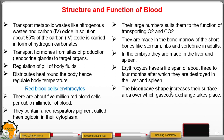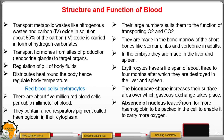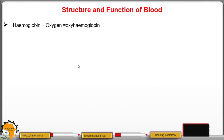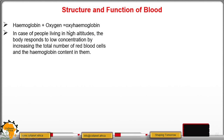Red blood cells are biconcave in shape to increase surface area for gaseous exchange. They also lack a nucleus, which provides room for more hemoglobin to be packaged in the cell, enabling it to carry more oxygen. When hemoglobin and oxygen combine, they form oxyhemoglobin — the form in which oxygen is transported.